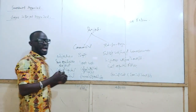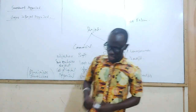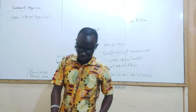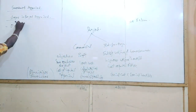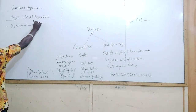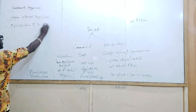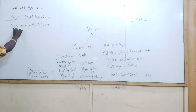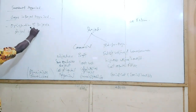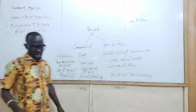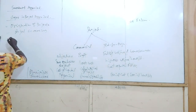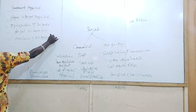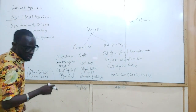Every project by a for-profit organization goes through four different stages. First, origination of projects. Second, project screening. Third, analysis and acceptance. Fourth, monitoring and review. These are the four stages in project appraisal.